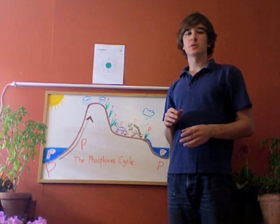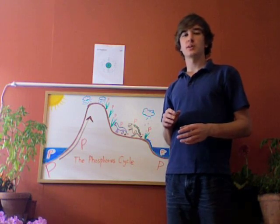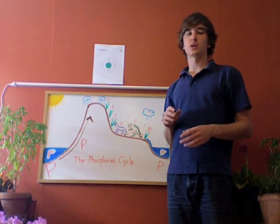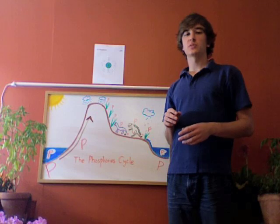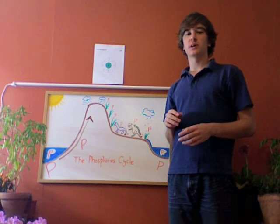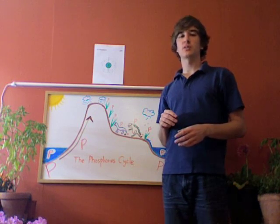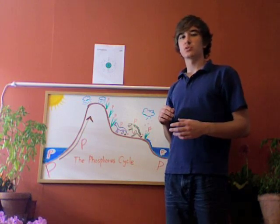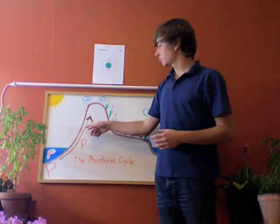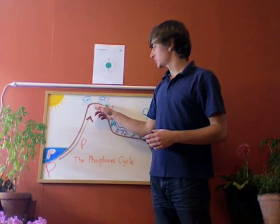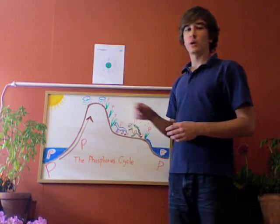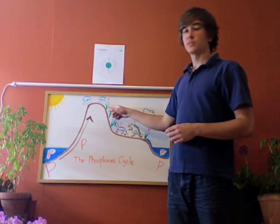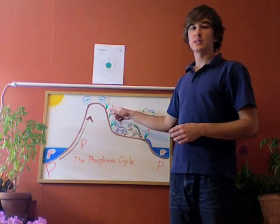The phosphorus cycle is known as a sedimentary cycle because phosphorus never enters the atmosphere like nitrogen or carbon. Most phosphorus in the world is found in sediments and rocks underneath the ocean floor. These rocks are lifted up through geological processes to become ridges and mountains, and are then weathered and eroded by rain, making phosphorus available to plants in the soil.